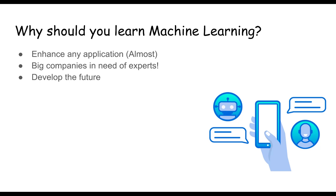If you are into software engineering or just getting started in your programming career, you more or less know that machine learning is now implemented in almost any modern application or system out there — whether it is Facebook, news applications, messaging apps, and so on. There is some kind of machine learning implemented in order for companies to enhance your experience and make the application more applicable to you as an individual instead of making it more general. By knowing machine learning you are capable of using the exact same algorithms and enhancing your own applications.